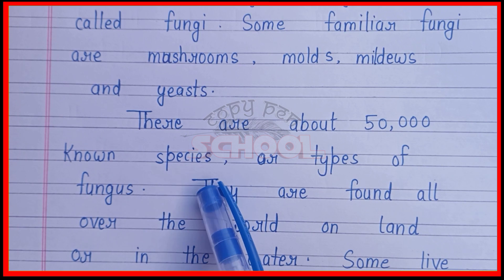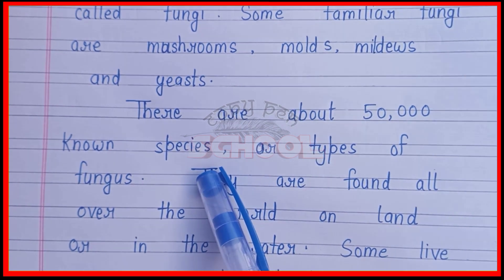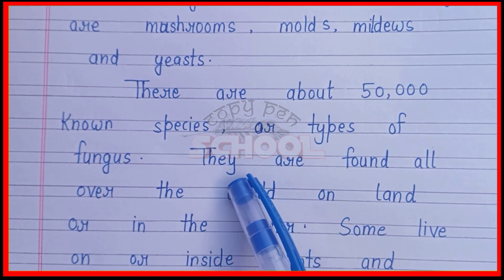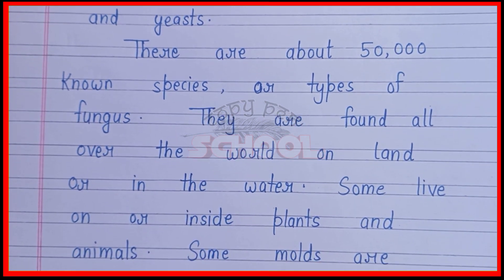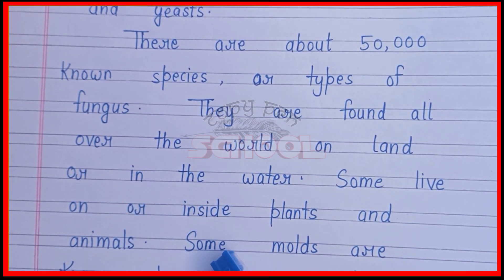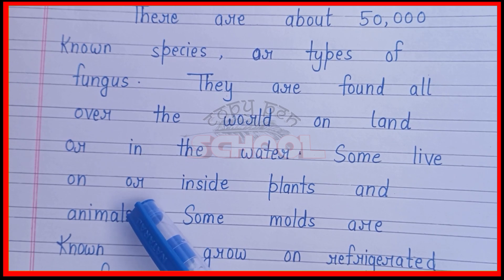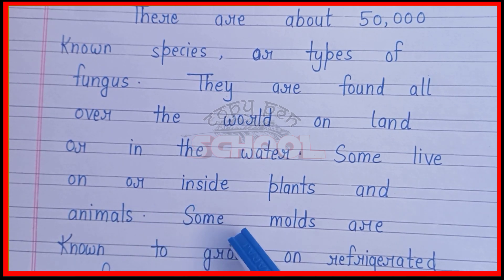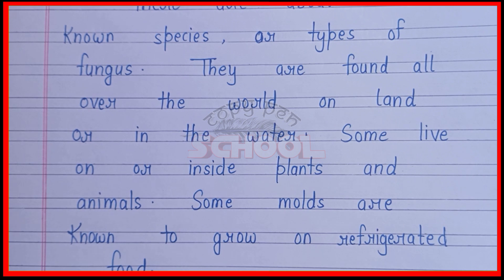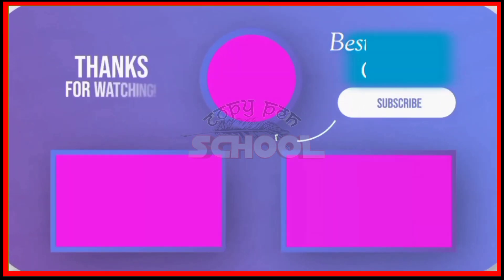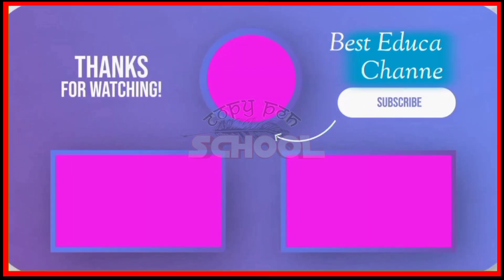There are about 5,000 known species or types of fungus. They are found all over the world, on land or in the water. Some live on or inside plants and animals. Thank you.